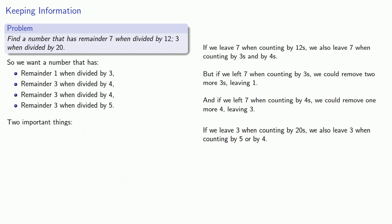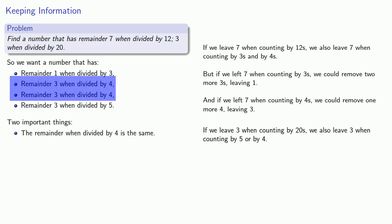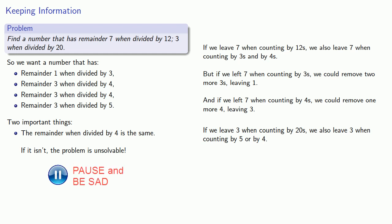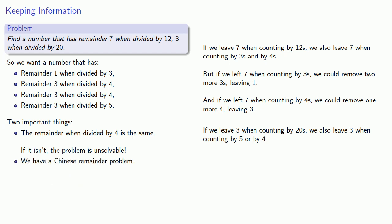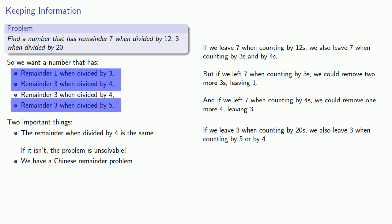Now there are two important things to recognize here. First, the remainder when dividing by 4 is the same — it's 3 in both cases. This is important because if it isn't the same, the problem is unsolvable. The other important thing is that we now have a standard Chinese remainder problem: find a number with remainder 1 when divided by 3, remainder 3 when divided by 4, and remainder 3 when divided by 5.